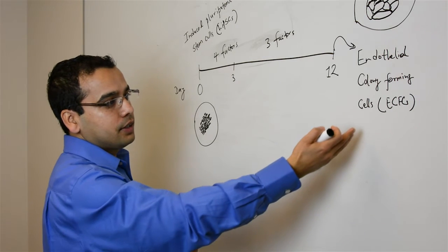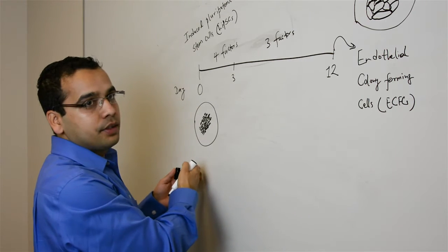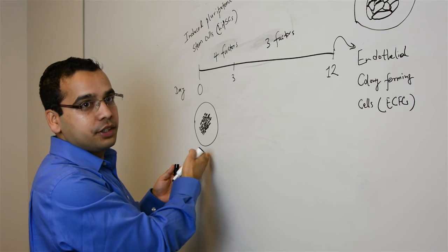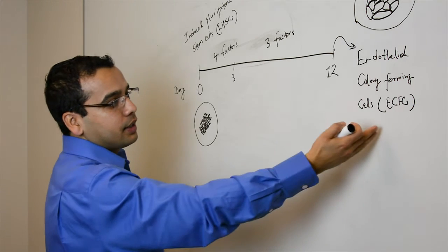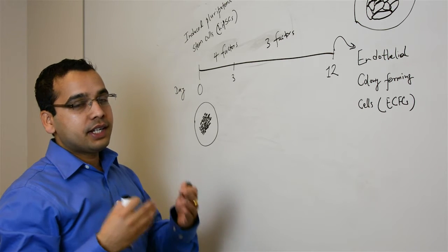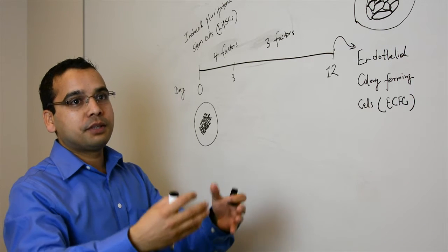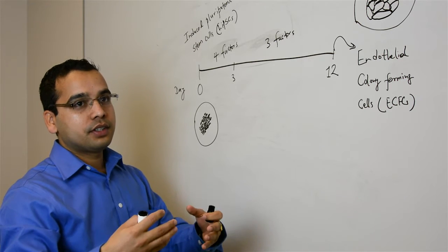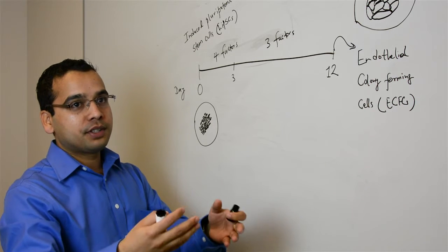These cells that we derived from human induced pluripotent stem cells actually form human vessels when we implant them into immunodeficient mice. So they are actually able to form human blood vessels in the mouse.